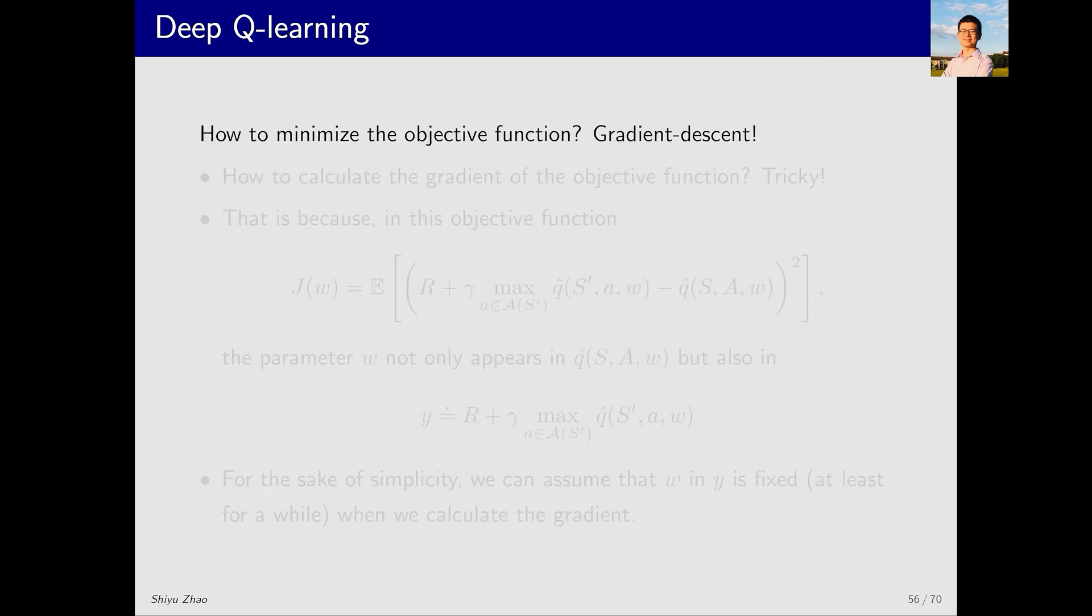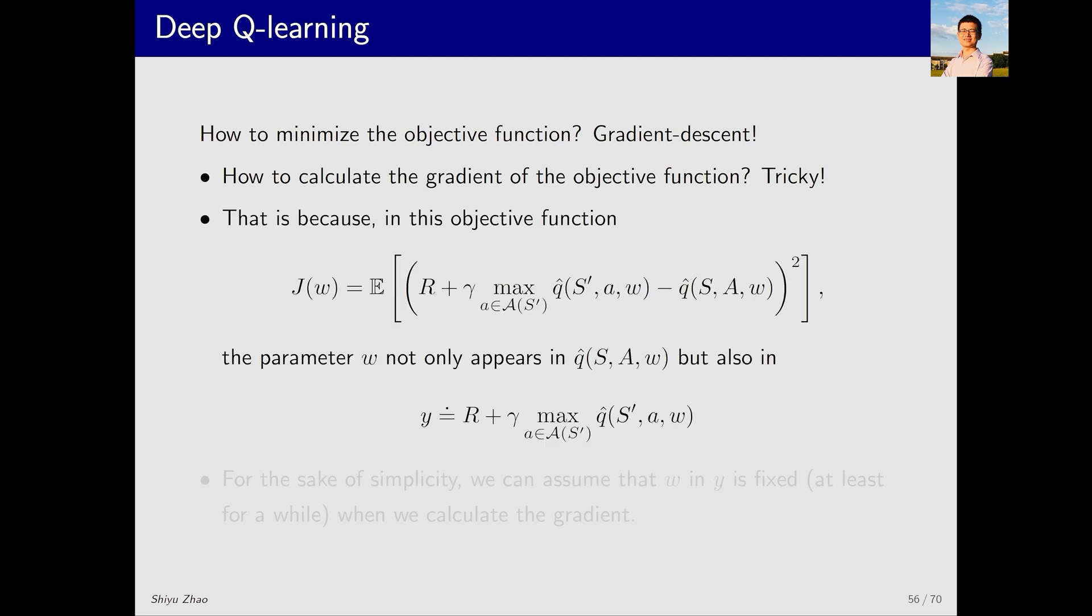Once we have this objective function the next step is to optimize it. What method do we use? Again we can use gradient descent. But there's a problem here, how do we compute the gradient of this objective function? This is tricky and it is also one of the contributions of deep Q-learning. Let's take a closer look. We need to compute the gradient of J with respect to W.